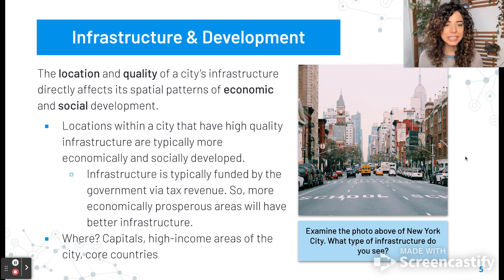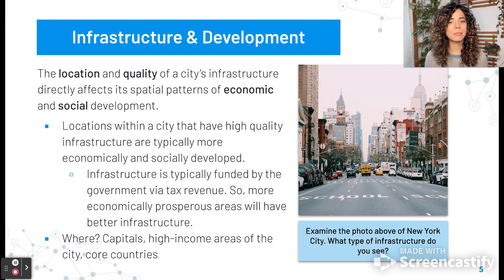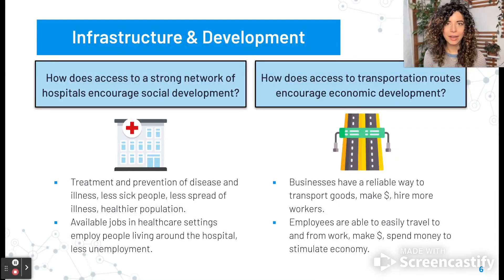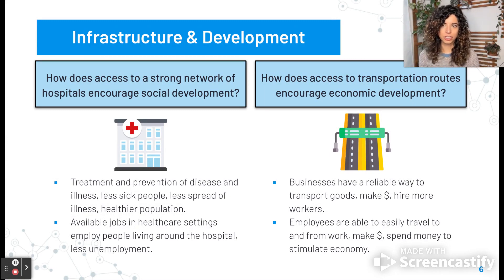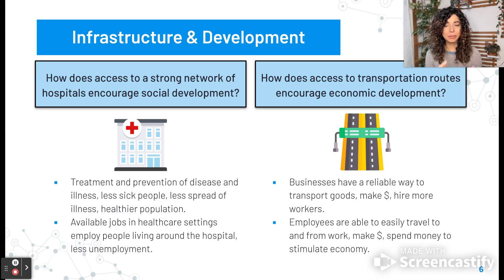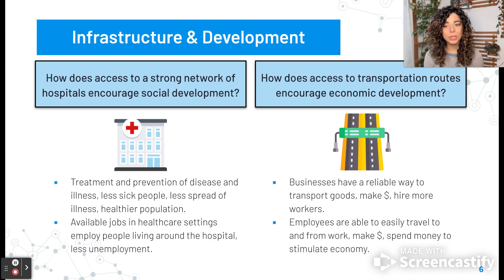Looking at this photo above — this is New York City. Take a minute to pause this video and ask yourself, what kind of infrastructure do you see? Try to think of as many things in this photo that you can identify. Hopefully you identified plenty of elements of infrastructure. Let's take a look at hospitals and transportation routes. How does access to a strong network of hospitals encourage social development? We see the ability to treat and prevent disease and illness, meaning there are less sick people, less spread of illness, and overall a healthier population. When you have hospitals, there are jobs available in healthcare settings, employing people living around the hospital, so there's less unemployment.